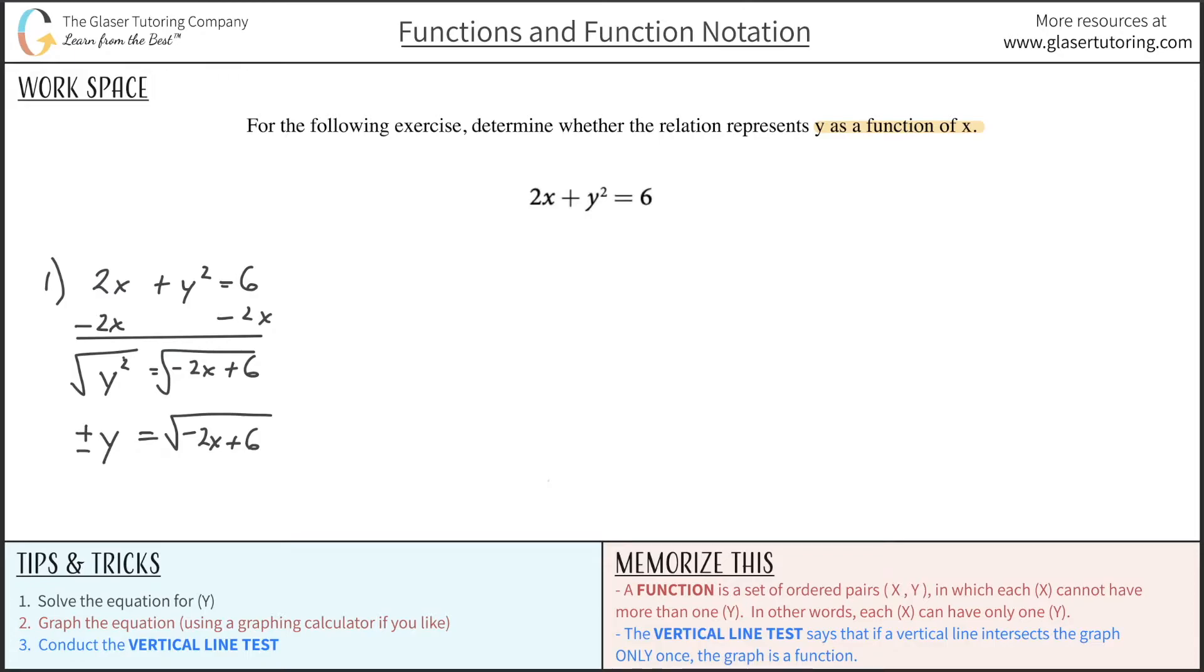So now what I need to do is, I need to know just y. Here I have positive and negative. So what I can do is I can just bring these signs over to the right-hand side. That would then leave me with y is equal to plus or minus radical negative 2x plus 6.